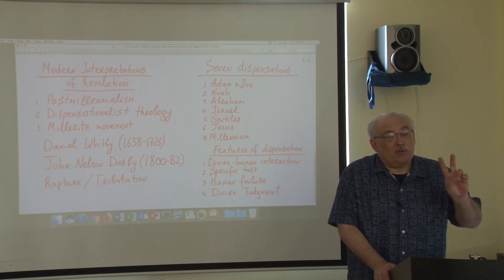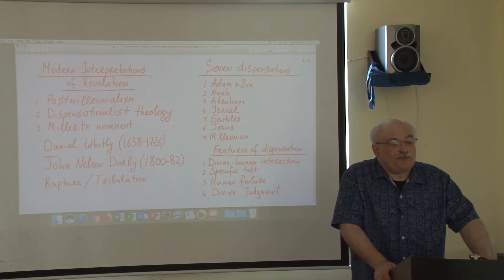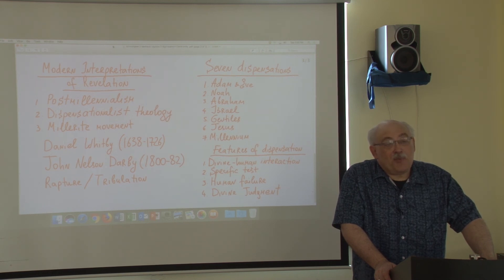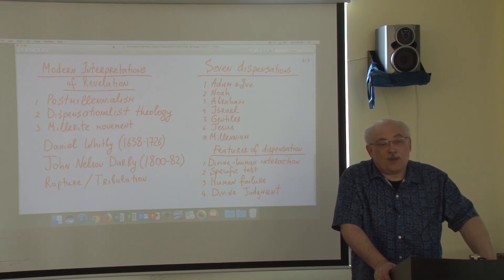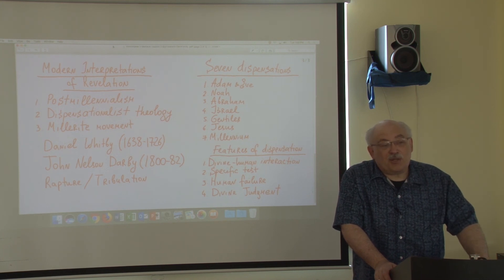This brings us to two words you've probably heard but may not have known belong to dispensationalism: rapture and tribulation. At some point Christianity will fail, and human failure will result in punishment. All those people who remain faithful to Jesus will experience the rapture — they will be taken up to heaven. Those who did not pass the test will remain on earth to go through the period of tribulation. So rapture is for the righteous, and tribulation is for the sinners.